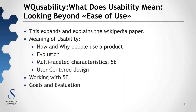The fourth paper, VQ Usability, defines what usability means looking beyond ease of use. It expands on the Wikipedia paper, exploring how and why people use a product, the evolution of how usability can be improved, and the multi-faceted characteristics called the five E's. It also covers user-centered design, working with the five E's, and goals and evaluation.